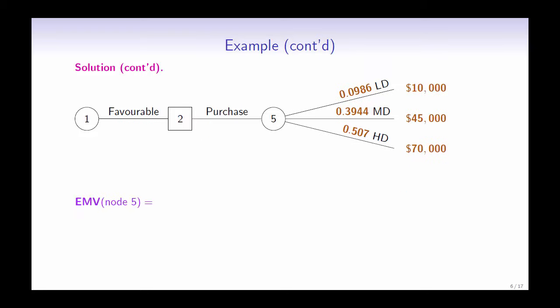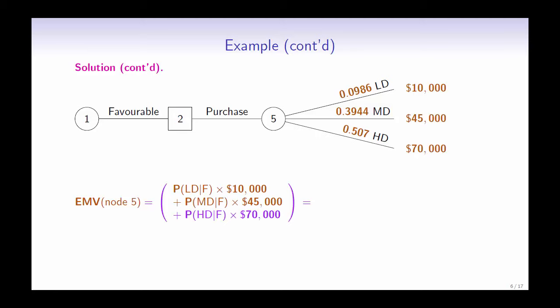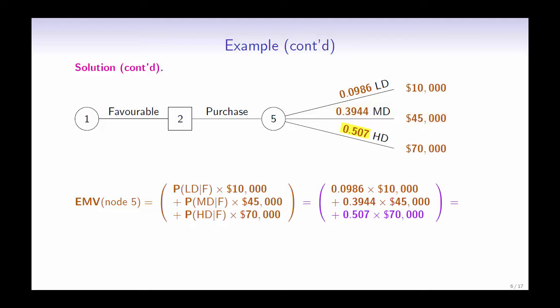The expected payoff of node 5 can be calculated in a similar manner. It is equal to 0.0986 times 10,000 plus 0.3944 times 45,000 plus 0.507 times 70,000. This gives us an expected payoff of $54,224.